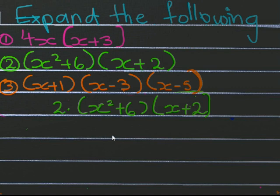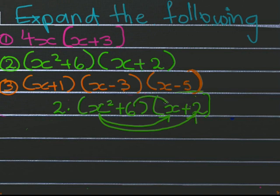Let's look at the second problem. We have two sets of brackets with addition happening inside. In this case you take each of the terms in the first bracket and multiply it with each of the terms in the next bracket. So we take x squared and multiply it with x, then take x squared and multiply it with 2, then take 6 and multiply it with x, and then take 6 and multiply it with 2.